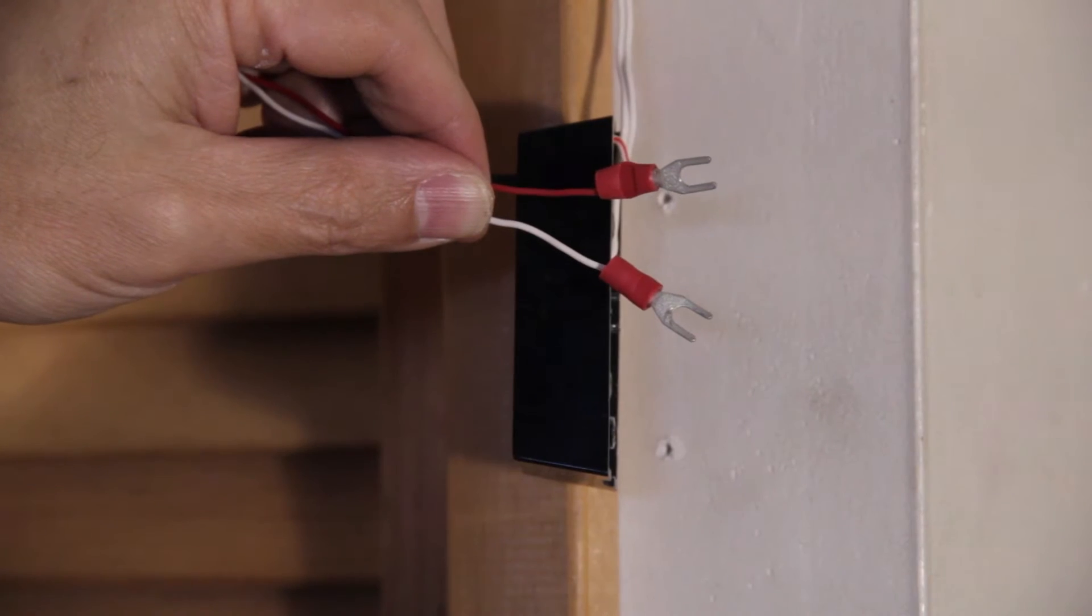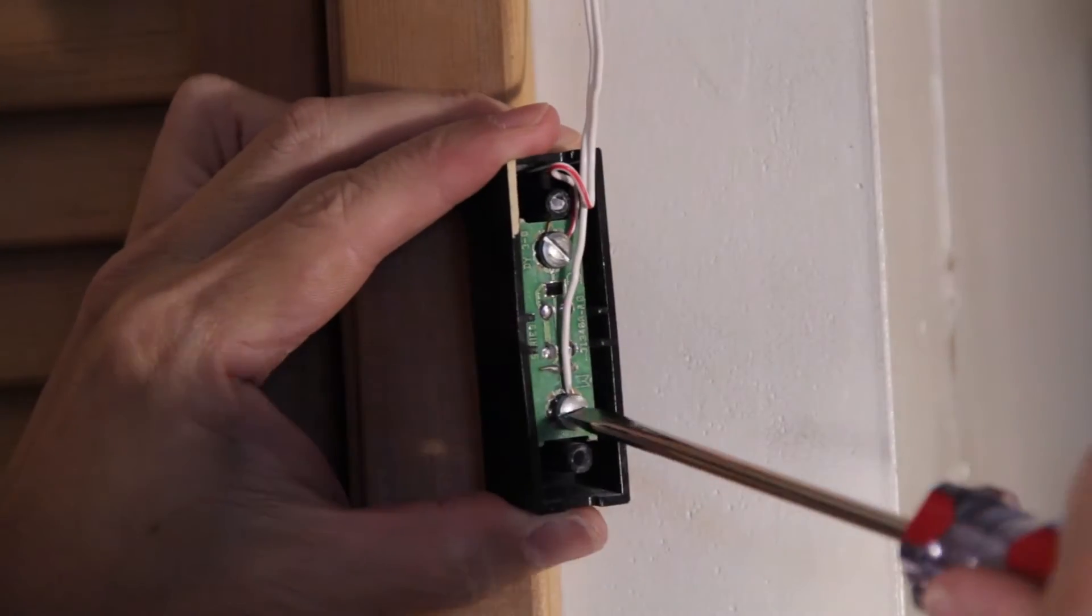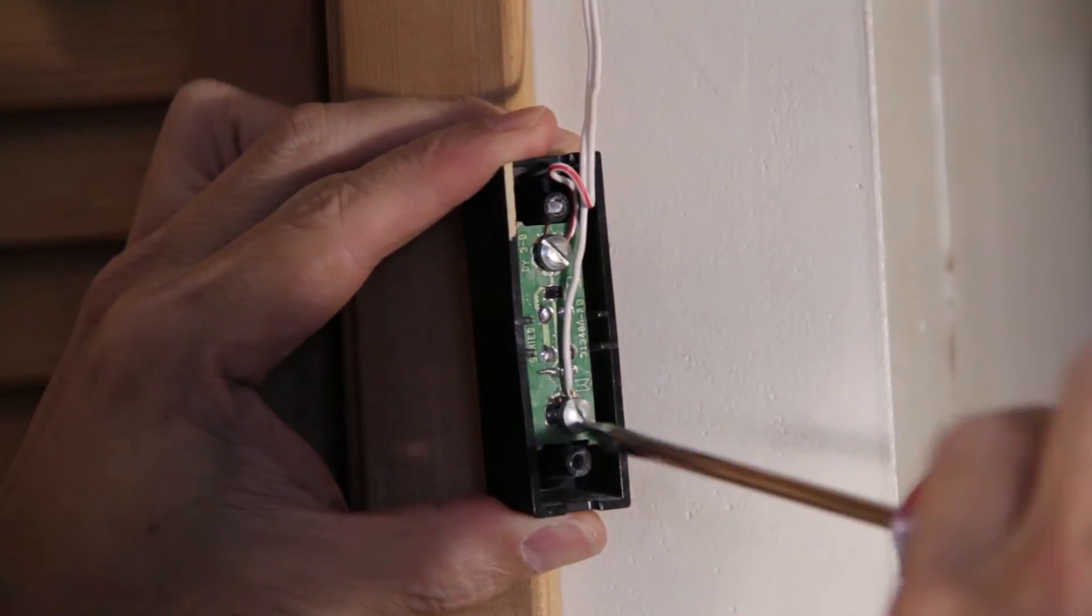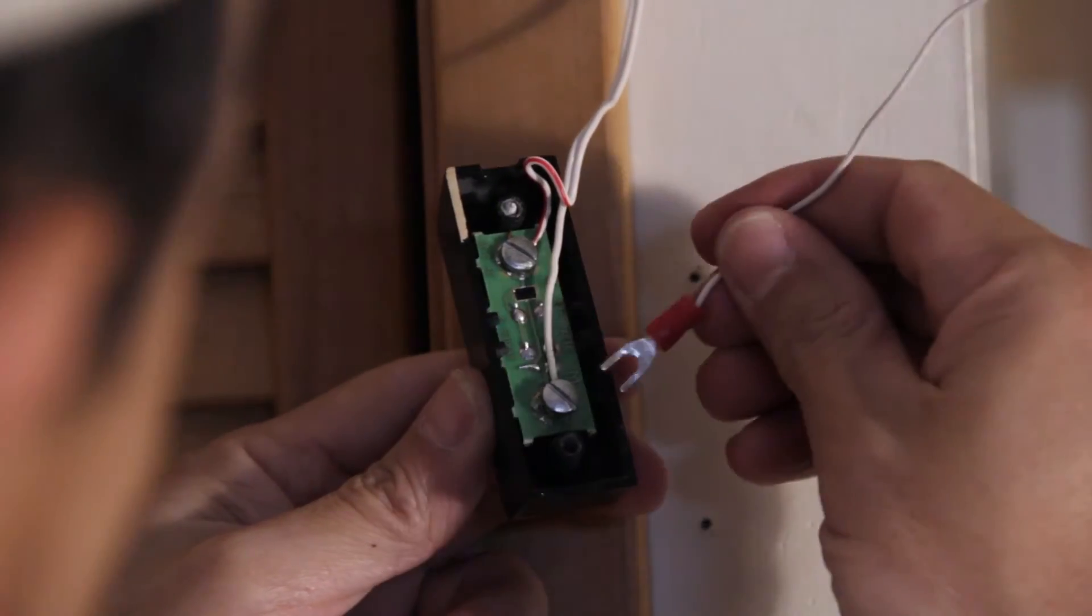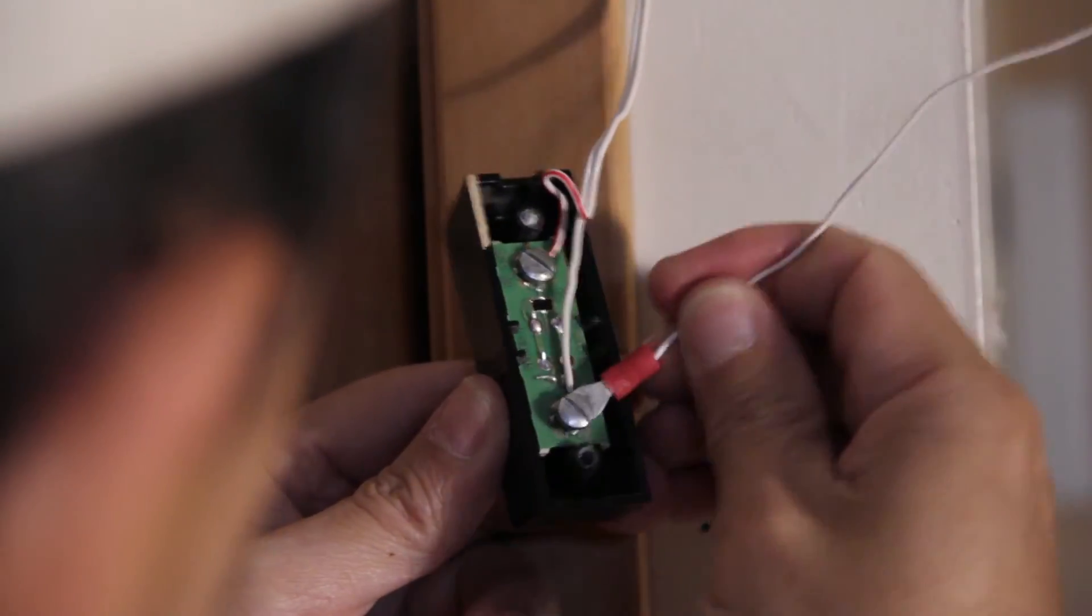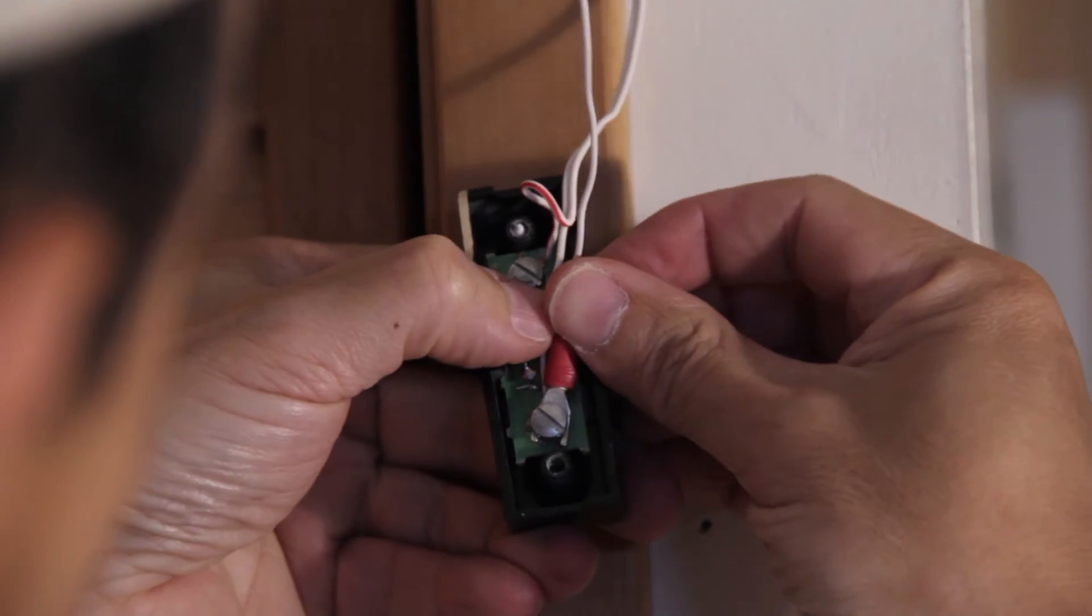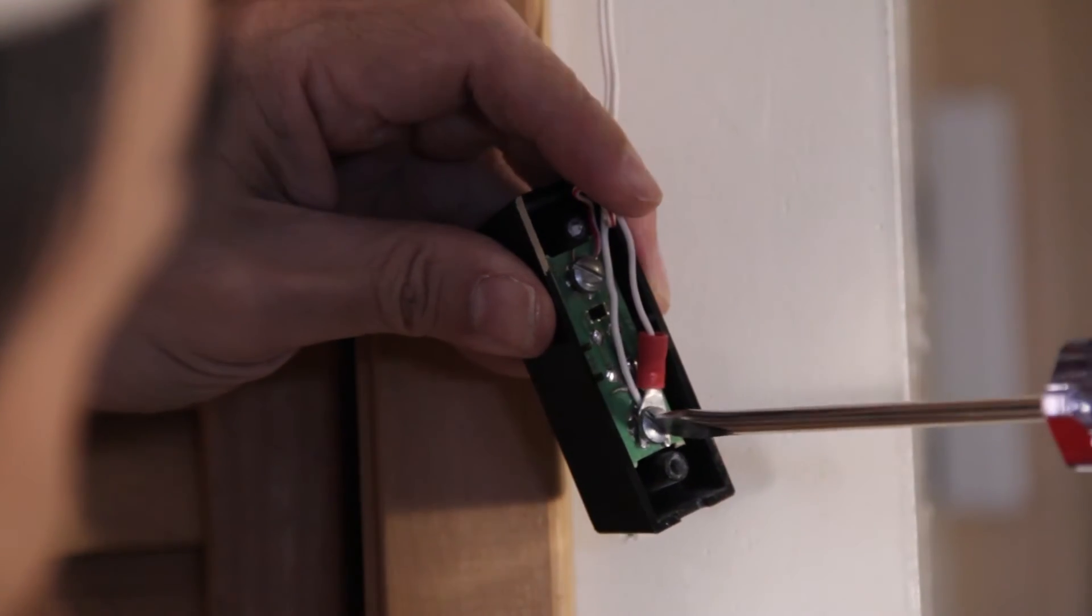Now take the bell wire with the spade connectors. Then loosen one of the terminals of the garage switch. Fit one of the spade connectors underneath. And re-tighten the terminal.